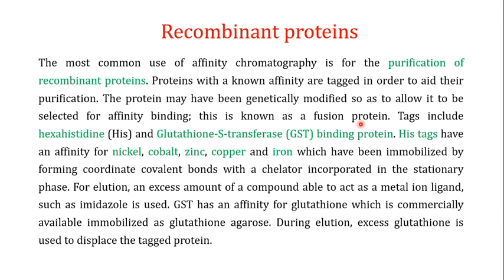Common tags used in recombinant proteins include the hexahistidine tag, meaning six consecutive histidines are used as a tag — 'hexa' referring to six. Another common tag is the glutathione S-transferase (GST) binding protein. We had a detailed discussion on the GST binding protein in the protein microarray video — a link will be shared in the description.